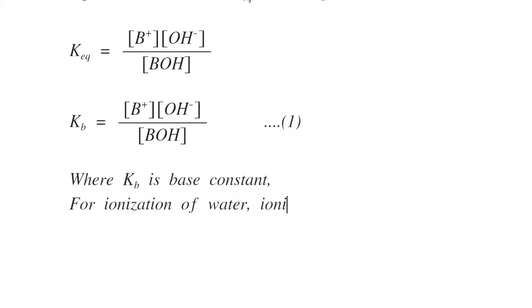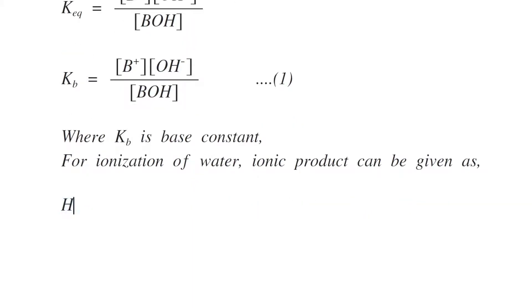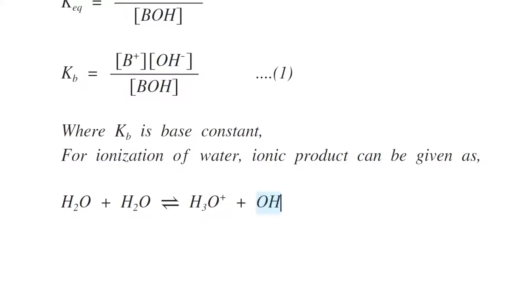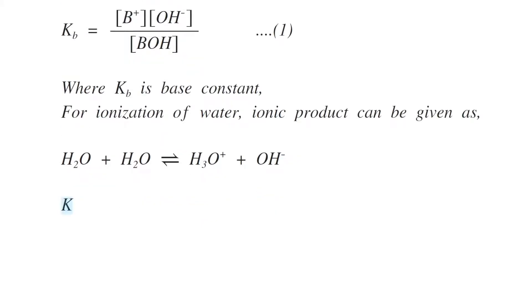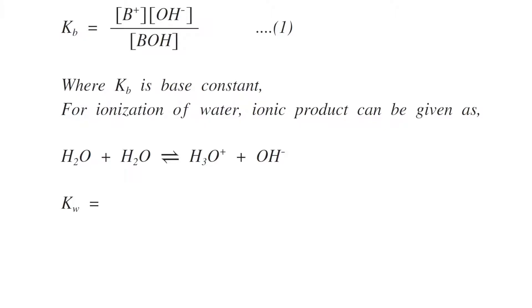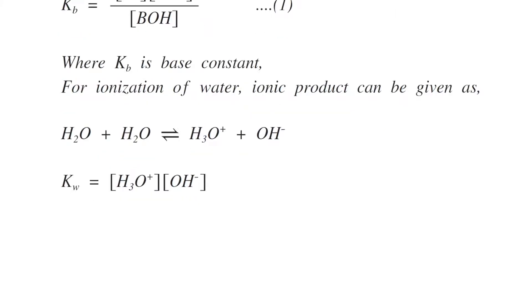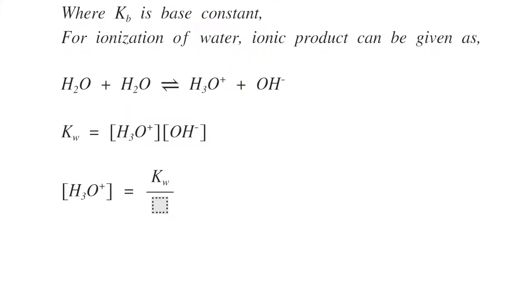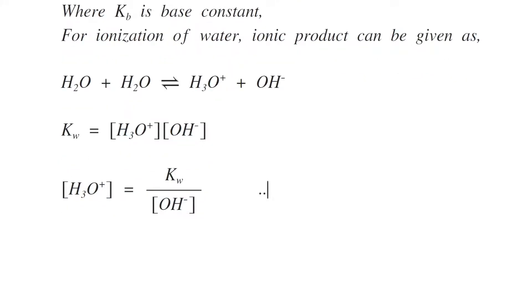For the ionization of water, the ionic product is given by H₂O + H₂O → H₃O⁺ + OH⁻, so the ion product Kw equals [H₃O⁺][OH⁻]. Rearranging this equation, [H₃O⁺] equals Kw divided by [OH⁻]. This will be equation number two.